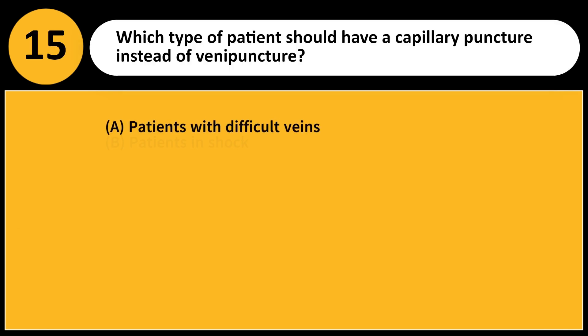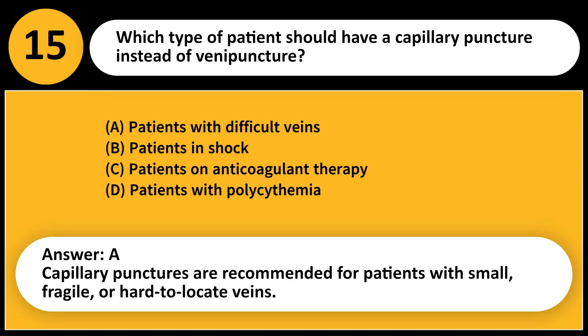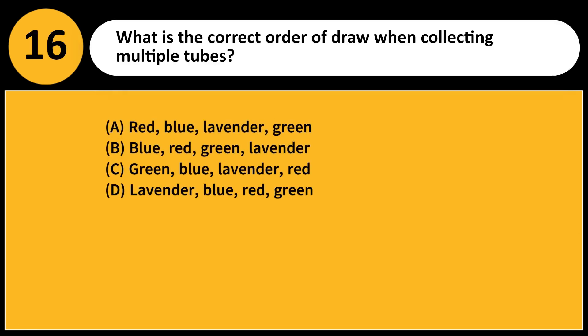Which type of patient should have a capillary puncture instead of venipuncture? A. Patients with difficult veins. B. Patients in shock. C. Patients on anticoagulant therapy. D. Patients with polycythemia. Answer: A. Capillary punctures are recommended for patients with small, fragile, or hard-to-locate veins.